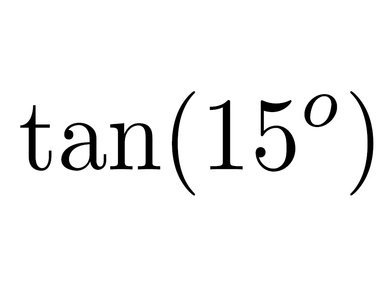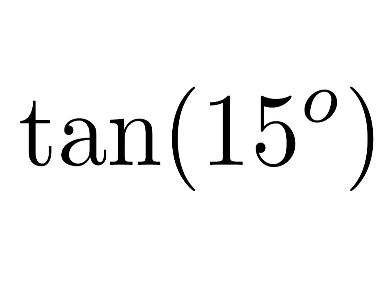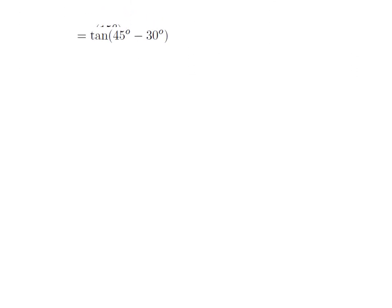In this video, we are going to find the value of tan of 15 degrees. The 15 degrees is equal to 45 degrees minus 30 degrees. So, tan of 15 degrees is equal to tan of 45 degrees minus 30 degrees.